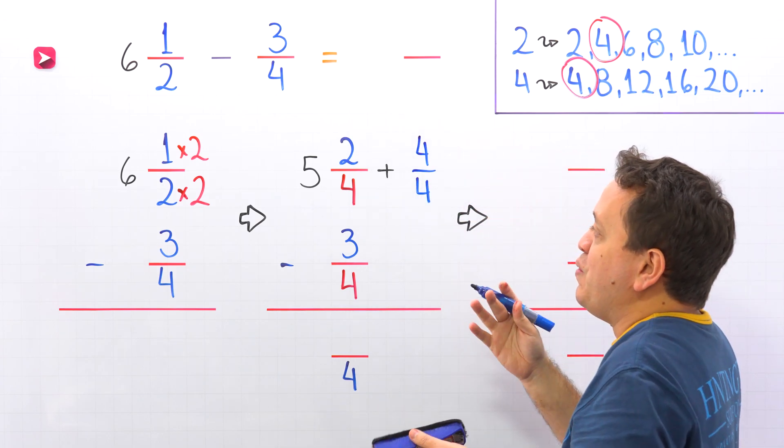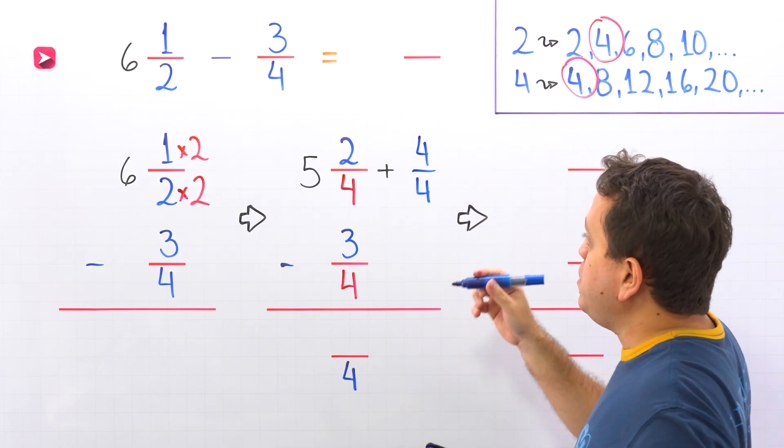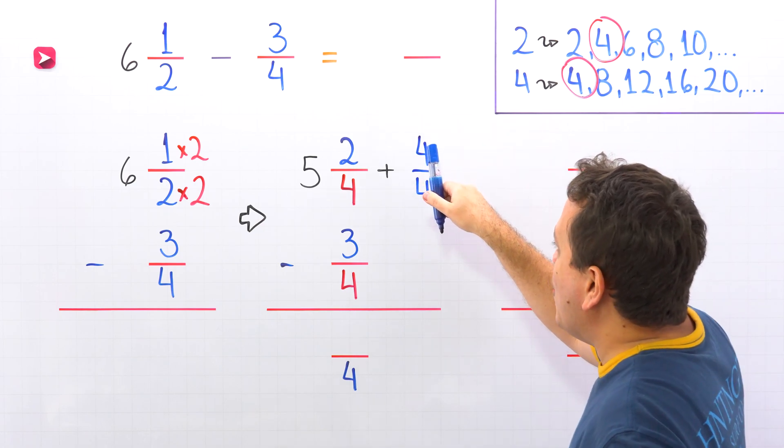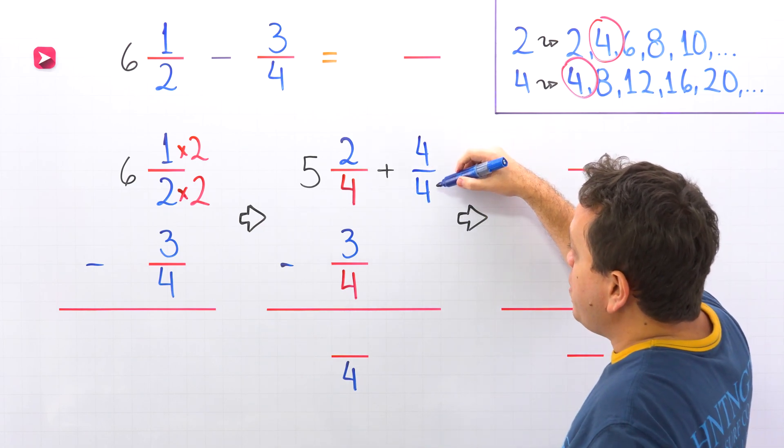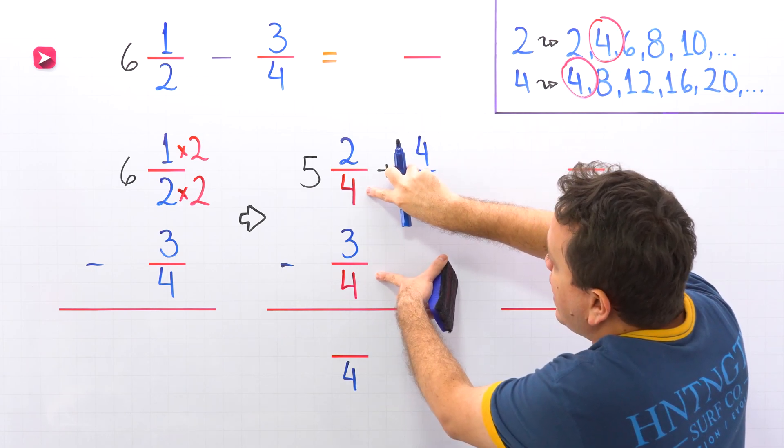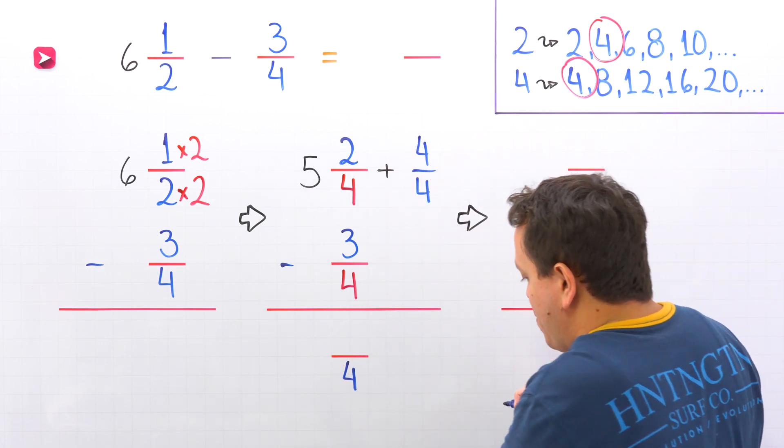Yeah, 4/4. Don't forget that we can also see a fraction as a division. And 4 divided by 4 give us 1. Also, we use the number 4 because these two fractions have a denominator of 4. Perfect.